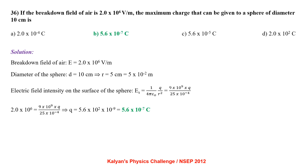If the breakdown field of air is 2.0×10⁶ V/m, the maximum charge that can be given to a sphere of diameter 10 cm. Radius r = 5×10⁻² m. Electric field on surface: E = (9×10⁹)q/(25×10⁻⁴). Setting 2×10⁶ = 9×10⁹q/(25×10⁻⁴), gives q = 5.6×10⁻⁷ coulomb.